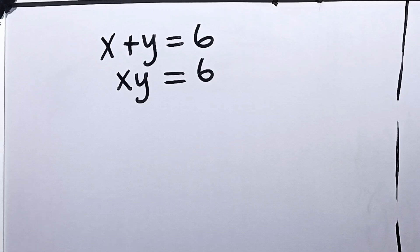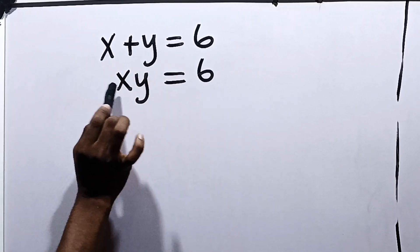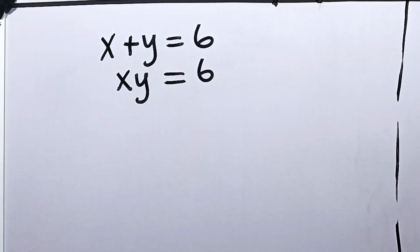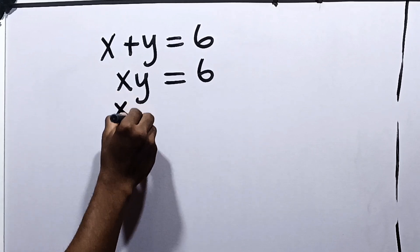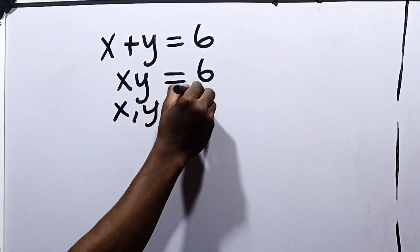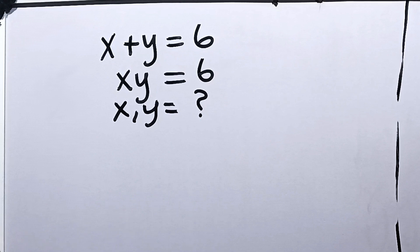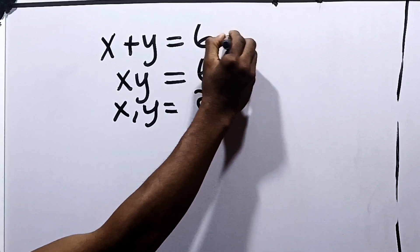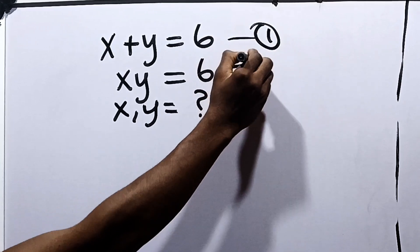Let's solve this together. It says x plus y is equal to 6, and xy is equal to 6. We're going to solve for the value or values of x and y. We can call this equation 1 and call this equation 2.